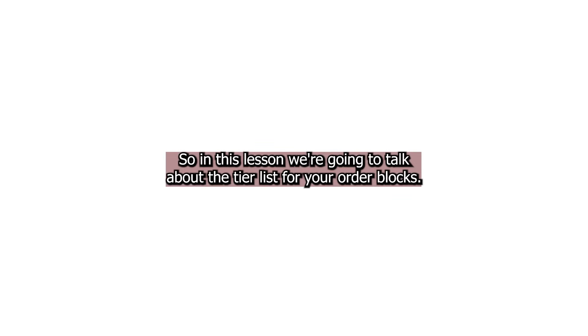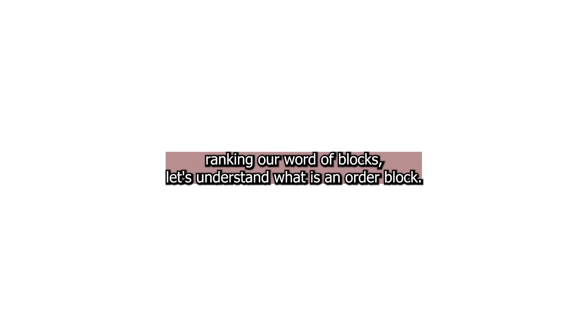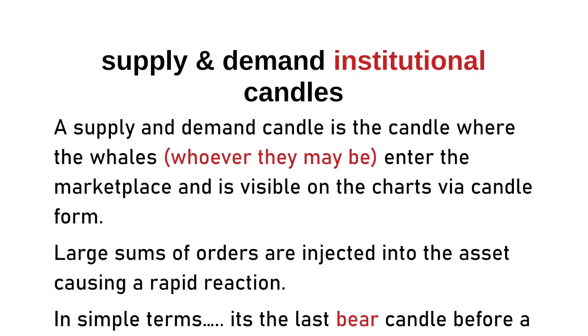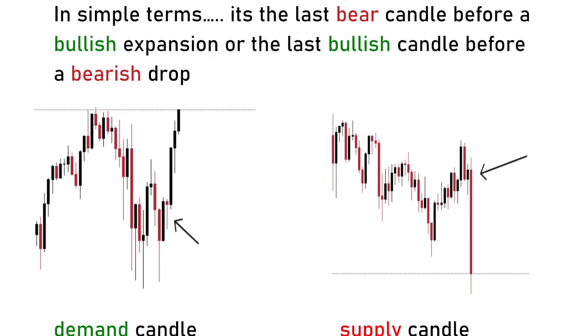In this lesson we're going to talk about the tier list for your order blocks. Before we jump in and start ranking our order blocks, let's understand what an order block is. Order blocks are derived from supply and demand. A supply and demand candle is the candle where the whales — your big players — enter the market, causing a rapid reaction. In simple terms, it's the last bearish candle before a bullish expansion, or the last bullish candle before a bearish drop.